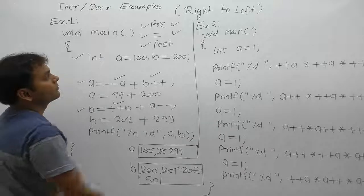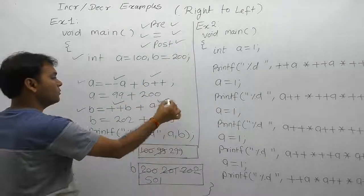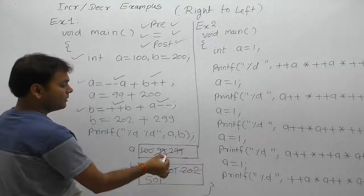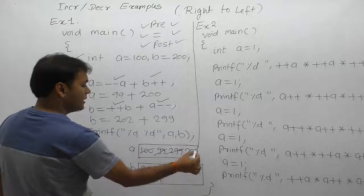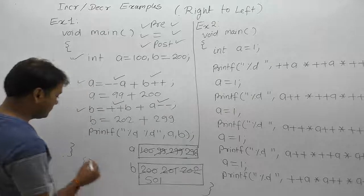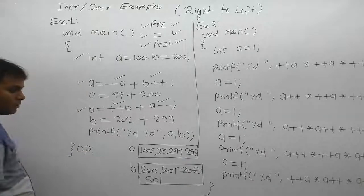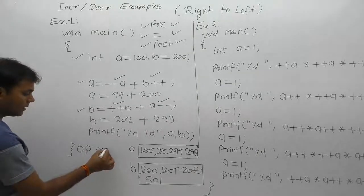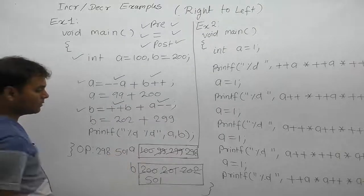After that, finally the post operation — how many post operations? Only one — post-decrement in a. Now a is decremented by one, therefore a becomes 298. This is the final value of a and b. The output in this case: value of a is 298 and value of b is 501.